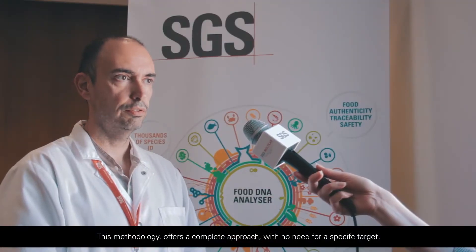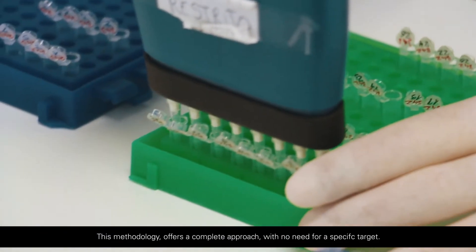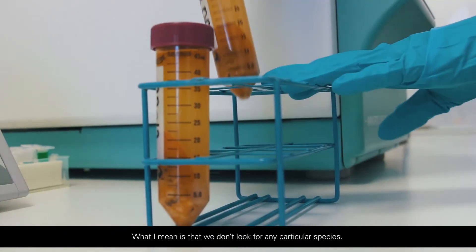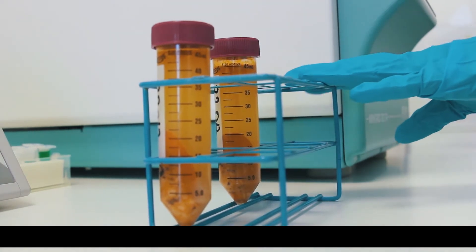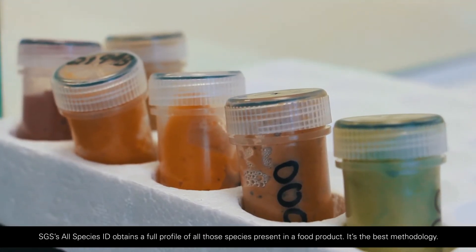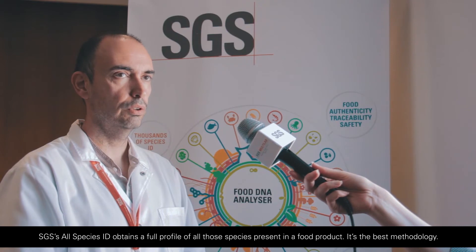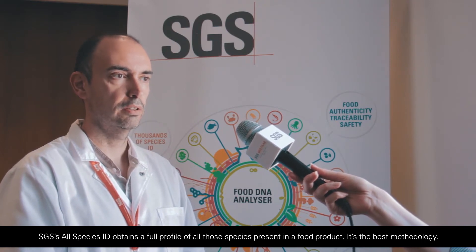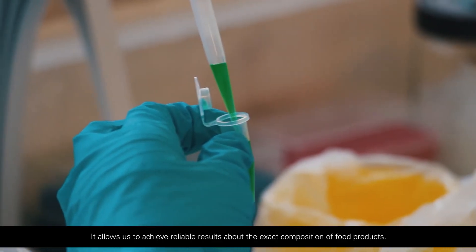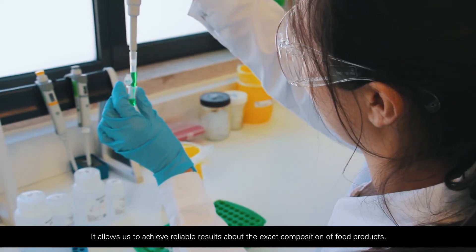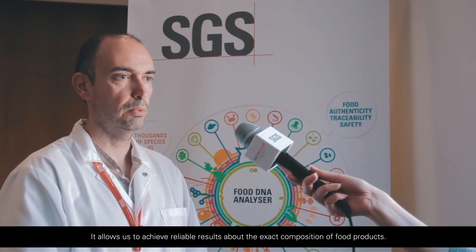This methodology offers a complete approach with no need for a specific target. What I mean is that we don't look for any particular species. SGS All Species ID obtains a full profile of all those species present in a food product. It's the best methodology and it allows us to achieve reliable results about the exact composition of food products.